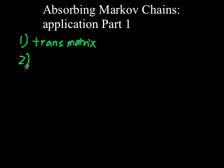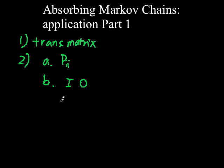Two, make sure this transition matrix is an absorbing Markov chain. So A, each absorbing state must be in the form P sub ii. And B, you must rearrange the matrix and see if it follows the form IORQ.